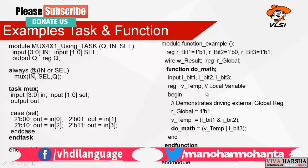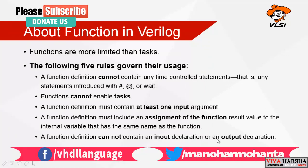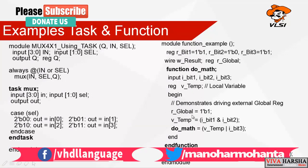Inside the function, a local variable 'v_temp' is computed using an AND operation. Importantly, the function name 'do_math' acts as the output variable — you will never see a separate output declaration in a function. The function name and the result variable share the same name, and the value assigned to 'do_math' is what gets returned to 'w_result'.